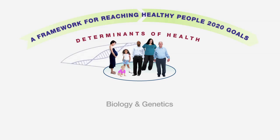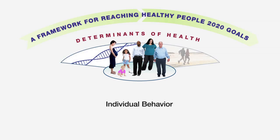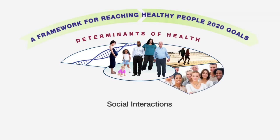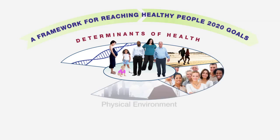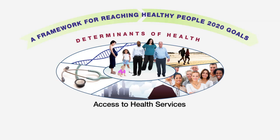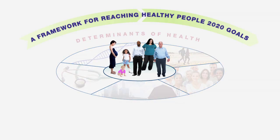Determinants of health include biological and genetic makeup, individual behavior, social interactions and norms, the physical environment, and access to health services. For example, stress, discrimination, education, housing, and unemployment are all determinants of health.